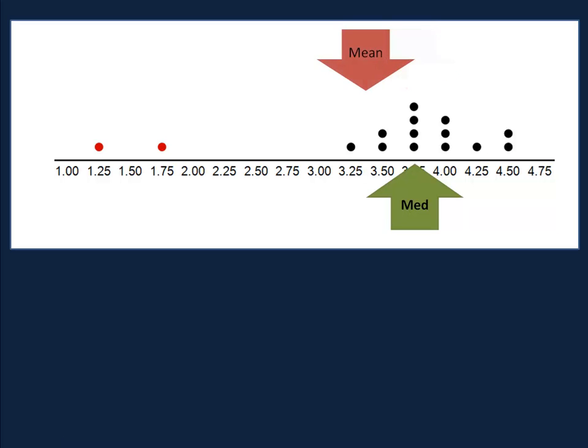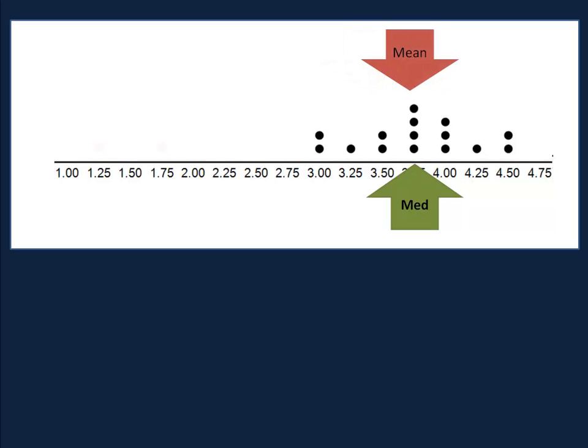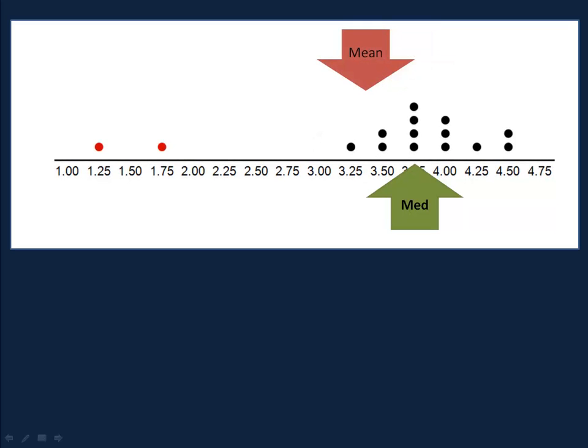The outliers caused the mean to move toward them. The truth of the matter is, whenever you have outliers, the mean moves toward them.